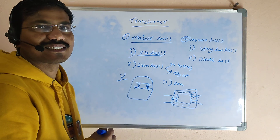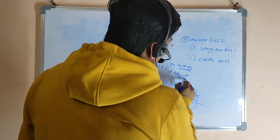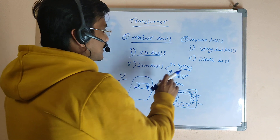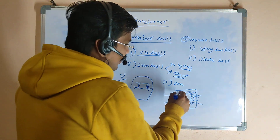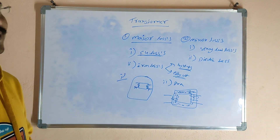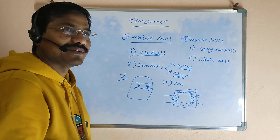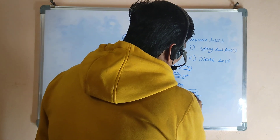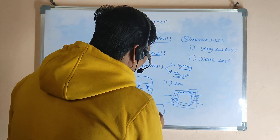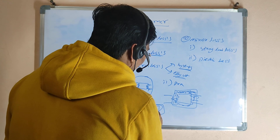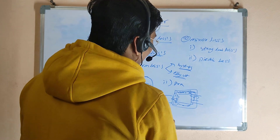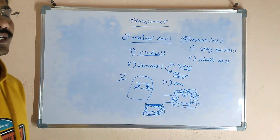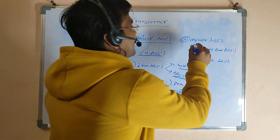The eddy current losses also take place in the core area. Originally with a solid core there are more eddy current losses, but after adding 4 to 5 percent silica the eddy current losses are reduced. Further, by laminating the solid core, the eddy current losses are reduced even more — lamination results in less eddy current losses.